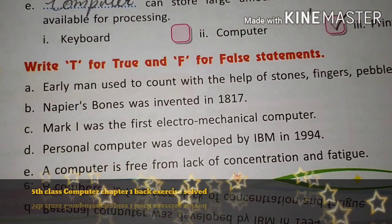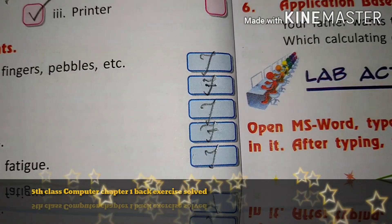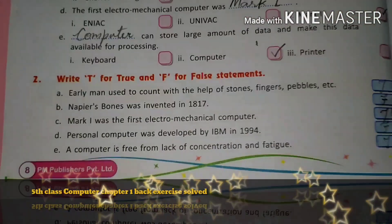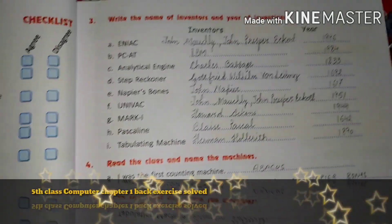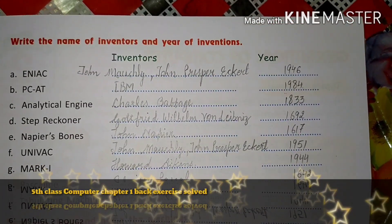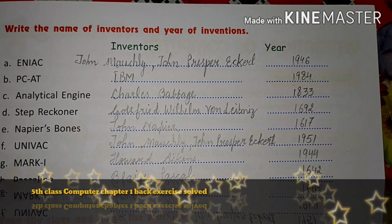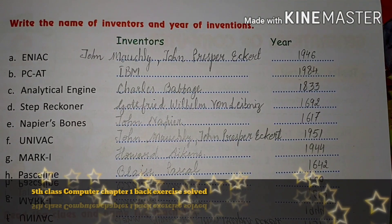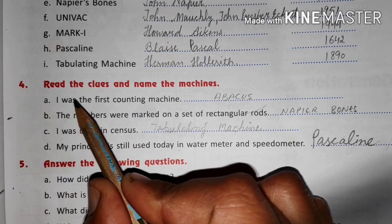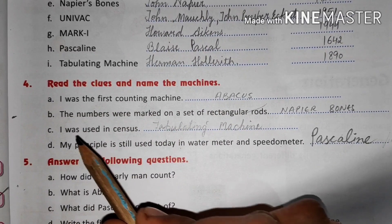The next part has the name of inventor and year of invention. You can pause the video and note down the inventor and year of invention. The first one: I was the first counting machine — it is abacus.